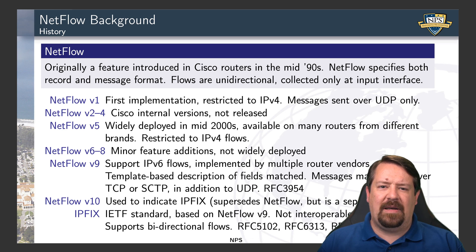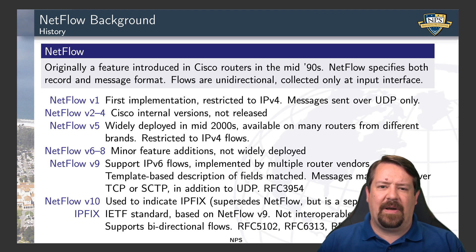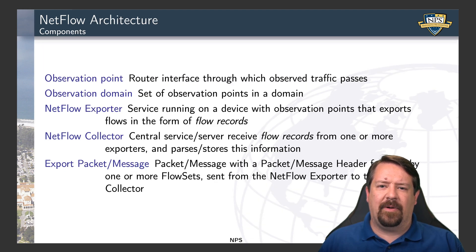IPFIX was based on NetFlow version 9 and in principle serves the same purpose. However, it is not backwards compatible with NetFlow and is more general in that it supports things like bidirectional flows. Whether we're setting up our own NetFlow collection or just working with the data, we should be aware of the architecture of the system. We start with an observation point, which is a router interface through which the traffic is passing, and we can have a set of these observation points, which is called an observation domain.